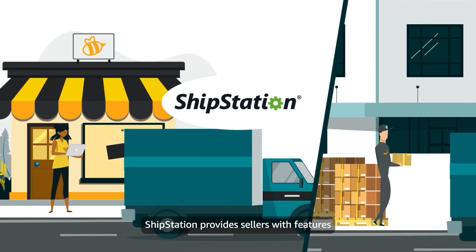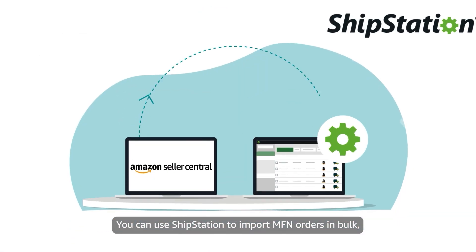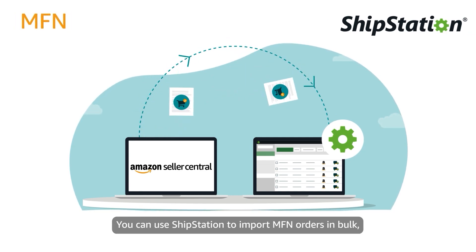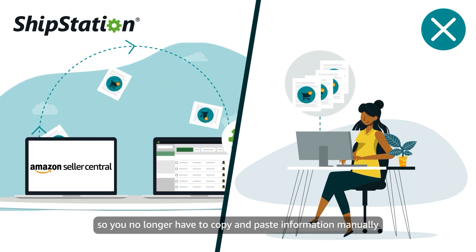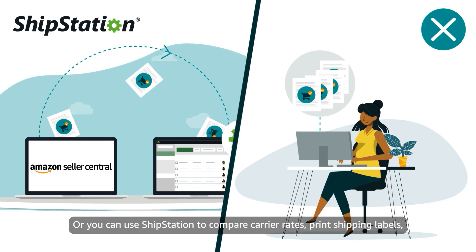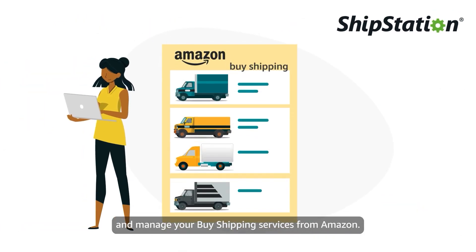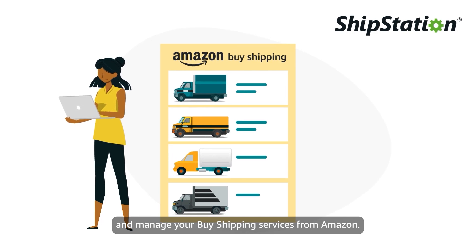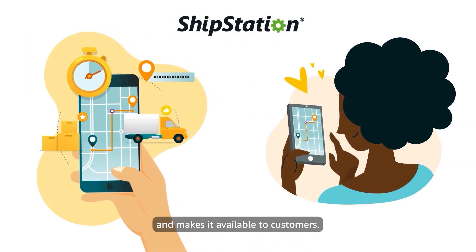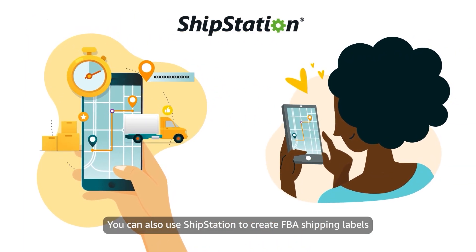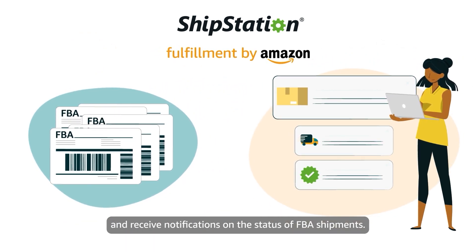ShipStation provides sellers with features that support both MFN and FBA fulfillment. You can use ShipStation to import MFN orders in bulk, so you no longer have to copy and paste information manually from Seller Central. Or you can use ShipStation to compare carrier rates, print shipping labels, and manage your buy shipping services from Amazon. The app updates tracking information in real time and makes it available to customers. You can also use ShipStation to create FBA shipping labels and receive notifications on the status of FBA shipments.